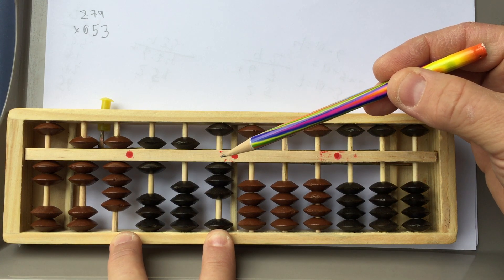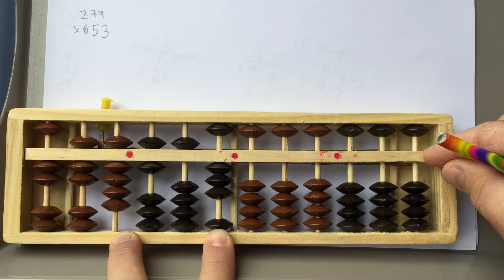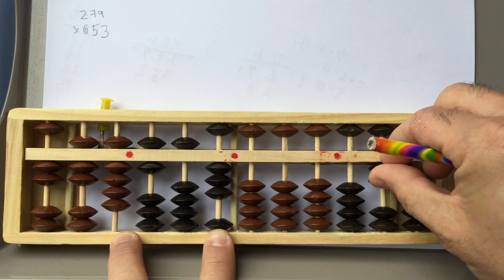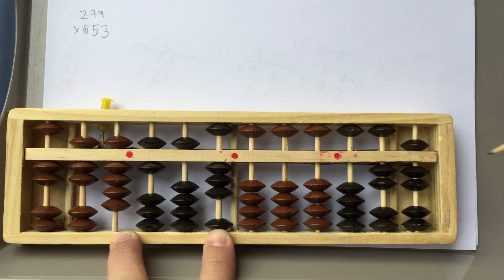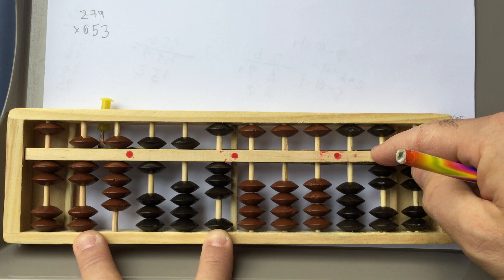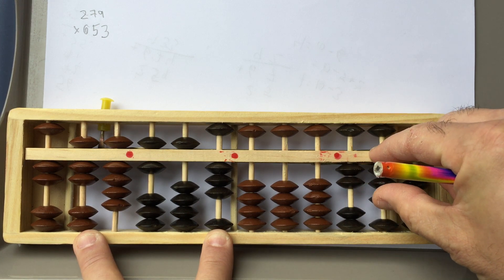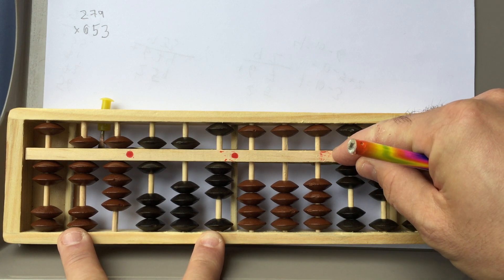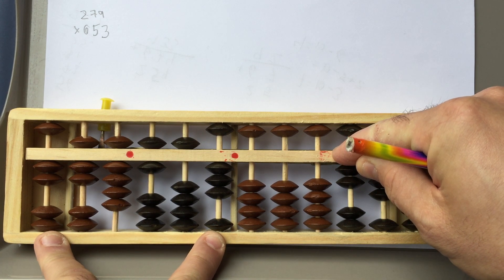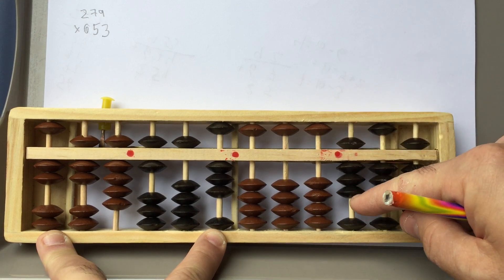So we got first number is 3 times 9. 3 times 9 is 27. 2, 7. Okay? Now we do 3 times 7, which will go here. 3 times 7 is 21. So we have 2 and 1. Then we go here. 3 times 4 is 6. 1, so that's 5 and a 1.